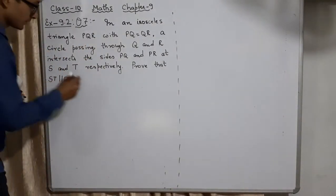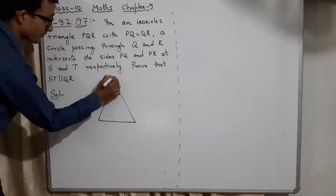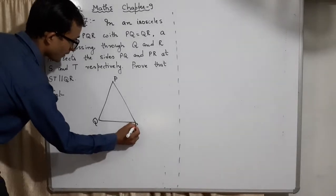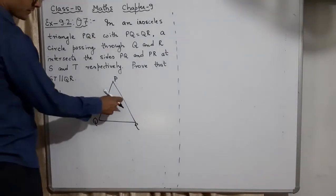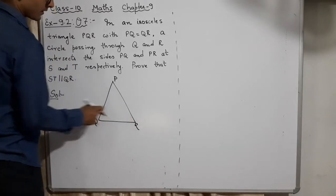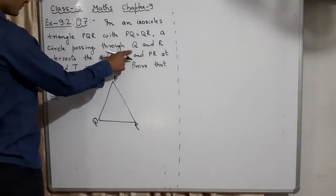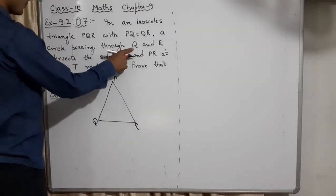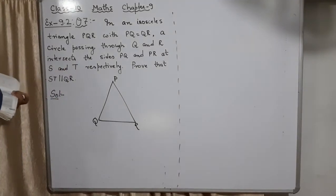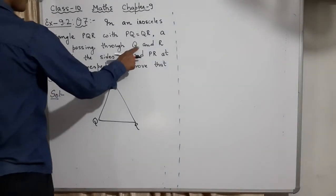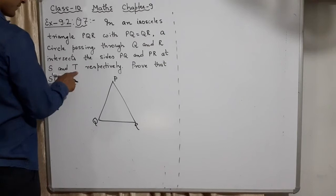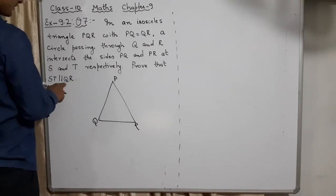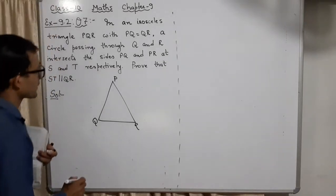Now here is the question: in an isosceles triangle PQR — diagram is not given so you have to make it — with PQ equal to QR. That means it is an isosceles triangle; two sides are equal, so two angles will also be equal. A circle passing through Q and R intersects the sides PQ and PR at S and T respectively. Prove that ST is parallel to QR.